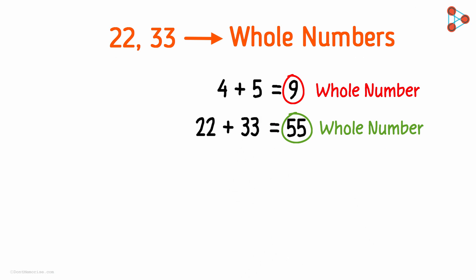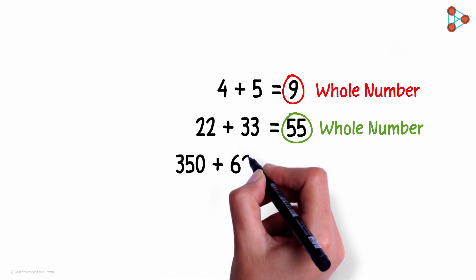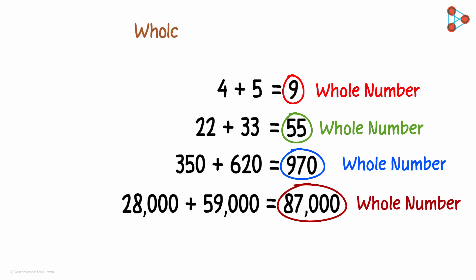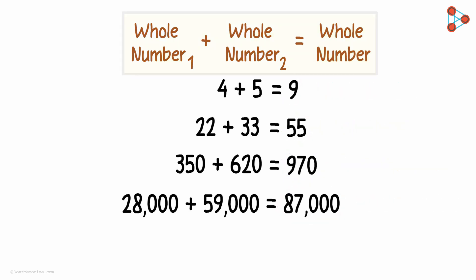Are you getting a gist of what I'm trying to say? Also, if I add two whole numbers 350 and 620, the answer to that is again a whole number. Similarly, 28,000 plus 59,000 also result in a whole number. Whenever we add any two whole numbers, the resultant number that we get is also a whole number. And this is the first property of a whole number.